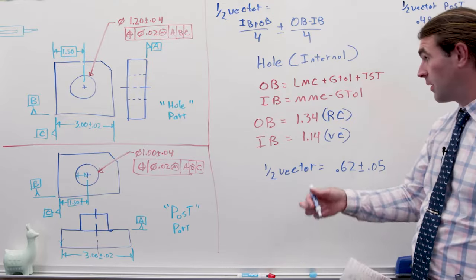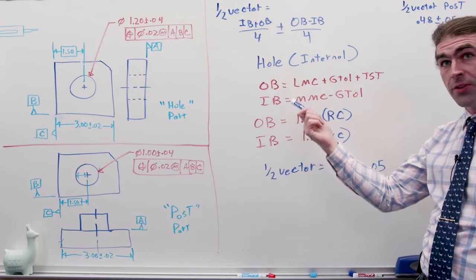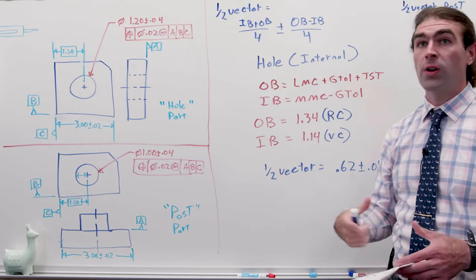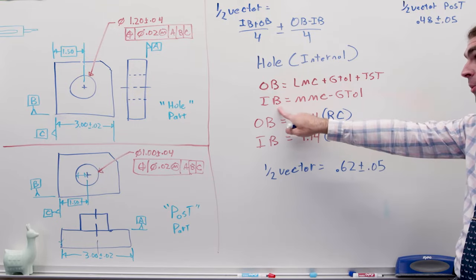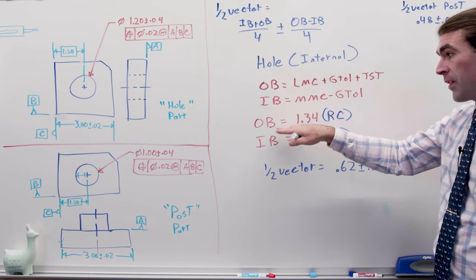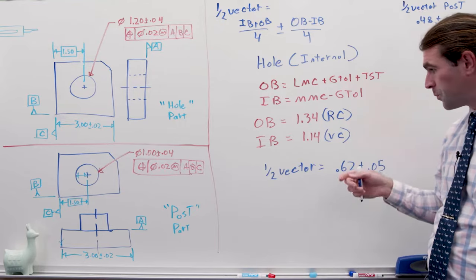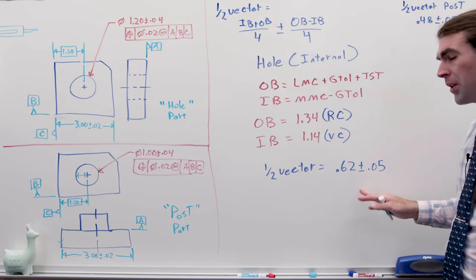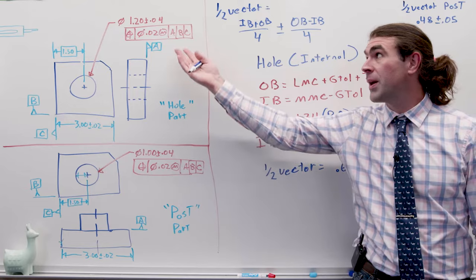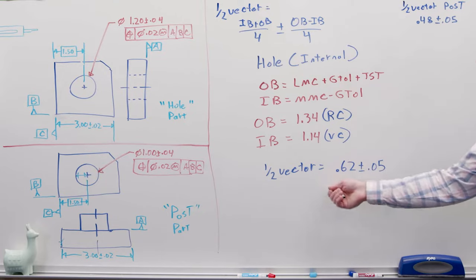For the hole, which is an internal feature, our outer boundary is the LMC plus the geometric tolerance plus the total size tolerance. Because it's an MMC call-out, as the hole gets larger you get more tolerance. The inner boundary is the virtual condition — the MMC minus the geometric tolerance. Our outer boundary in this case is 1.34, and our inner boundary is 1.14. Our half vector is 0.62 plus or minus 50 thousandths. It makes sense that both are plus or minus 50 thousandths because the geometric tolerance and size are the same on both — the only difference is the actual dimension.